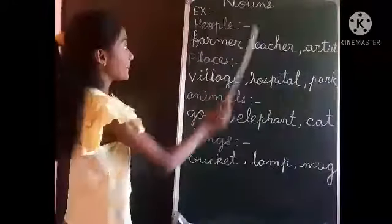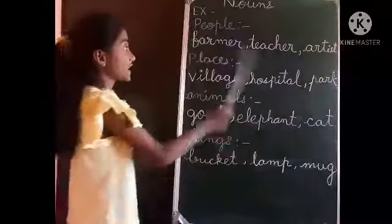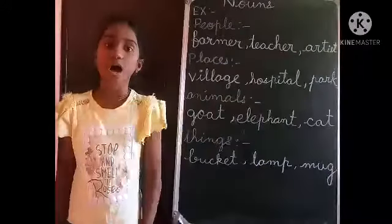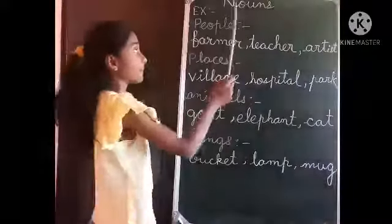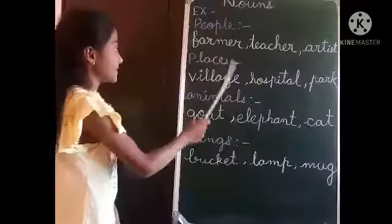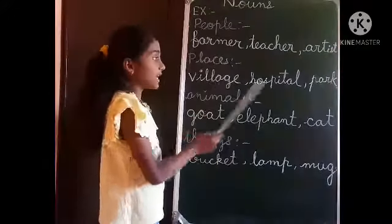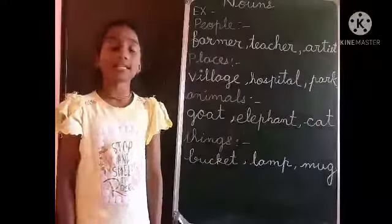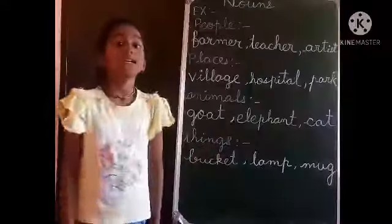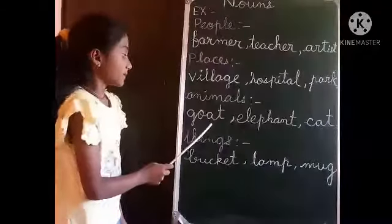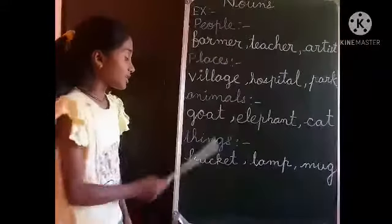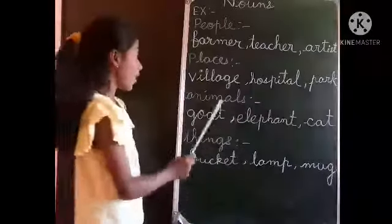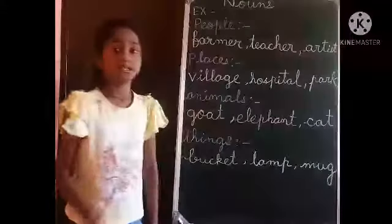First, peoples. Names such as farmer, teacher, artist, etc. are the names of people. Second, places. Names such as village, hospital, park, etc. are the names of places. Third, animals. Names such as goat, elephant, cat, etc. are the names of animals.